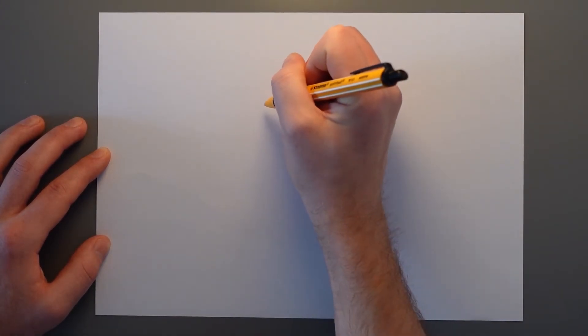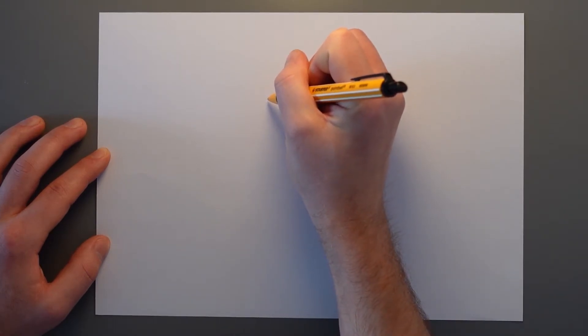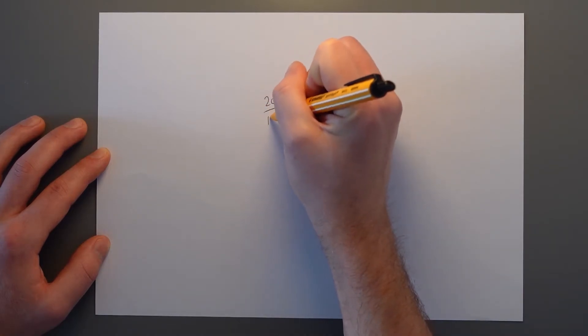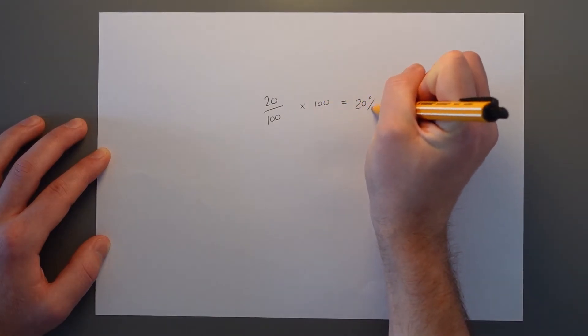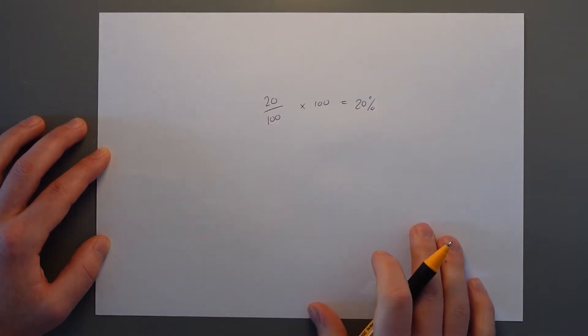Standard percentage sort of stuff. Like what is 20 out of 100, you would do 20 divided by 100 and then times 100, obviously it's 20% in this case, but that simple process.